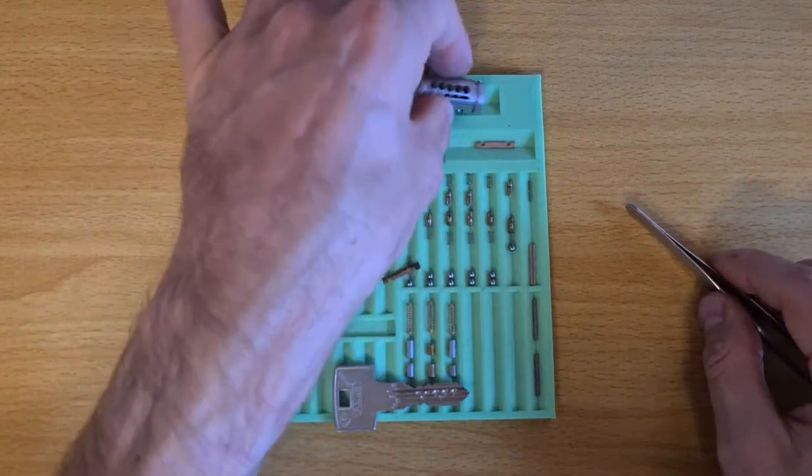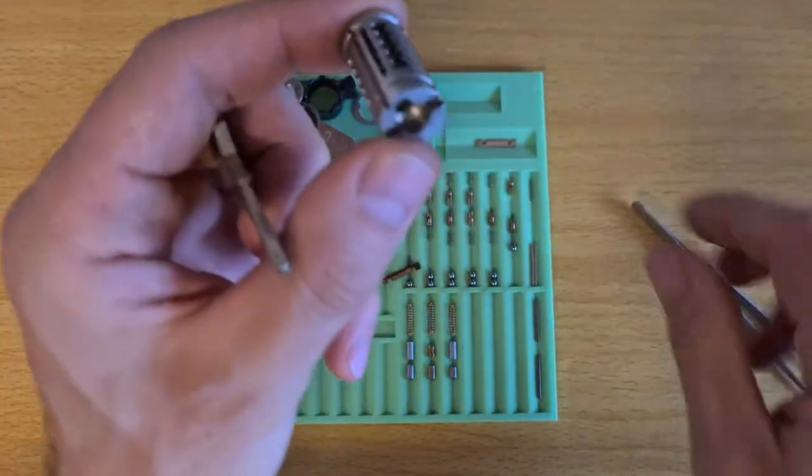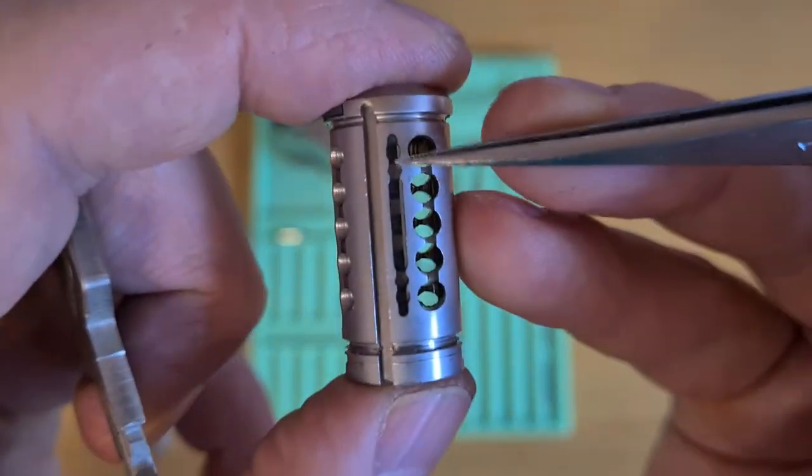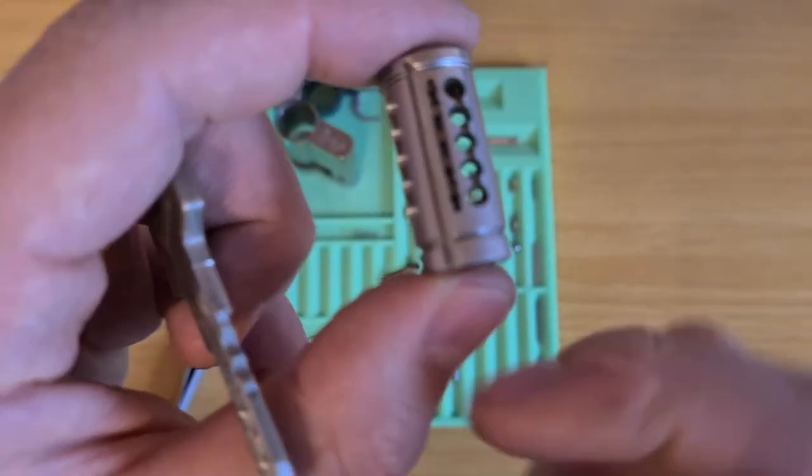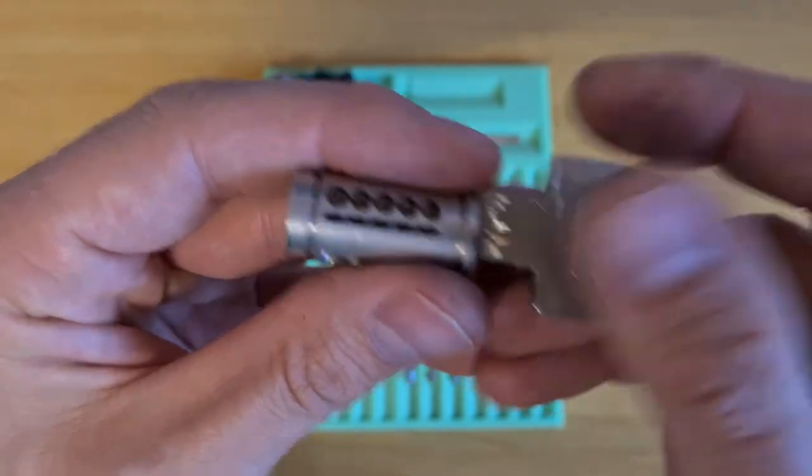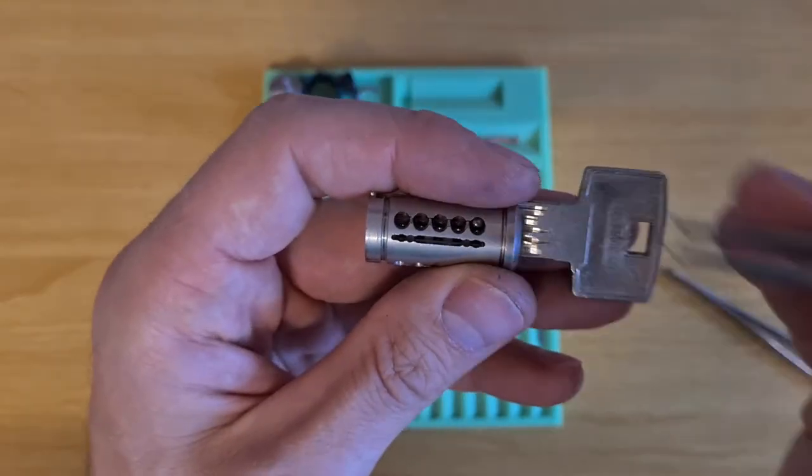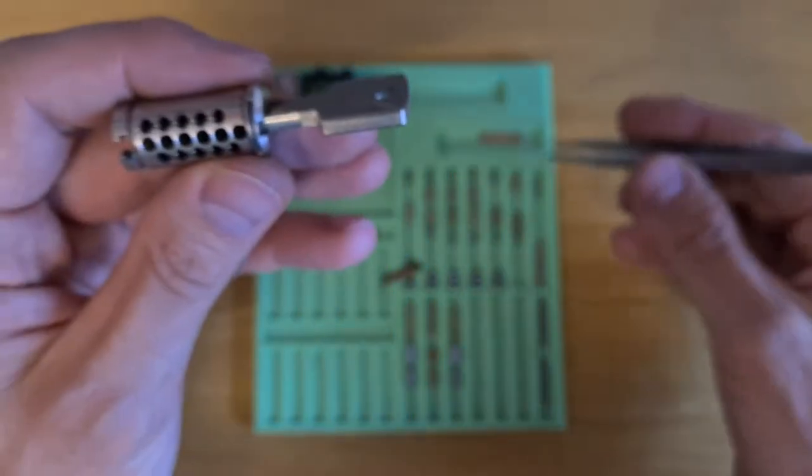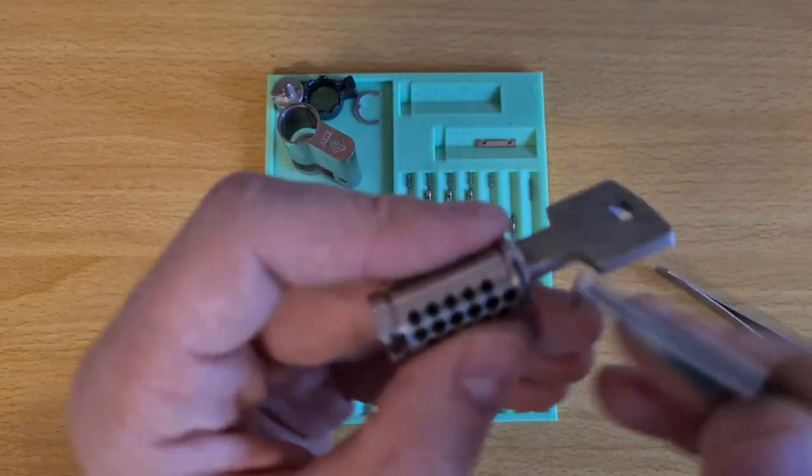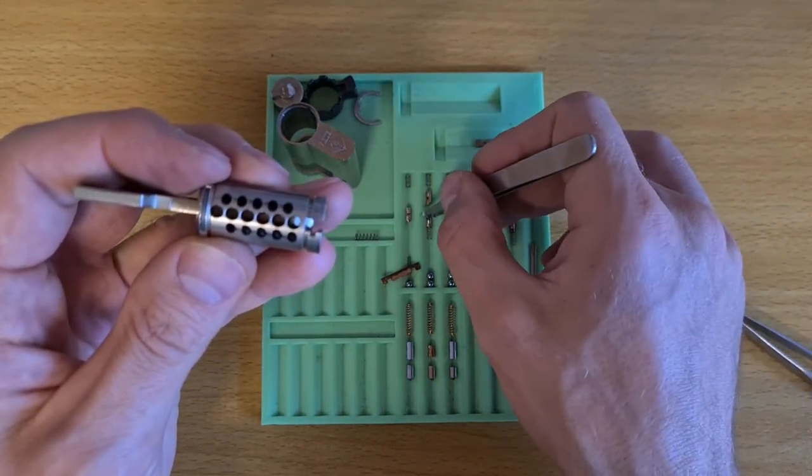How the sliders operate is quite interesting. The sliders have to move in this way to align with the sidebar, but the key doesn't interact with them directly. When you insert the key, it pushes against the ball bearings. There are ball bearings everywhere in there, and the sliders are being pushed by the balls.